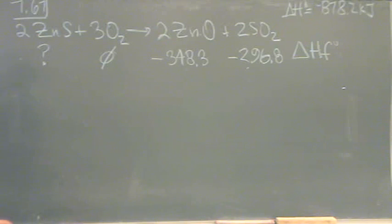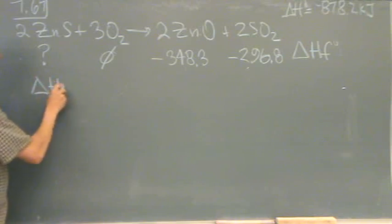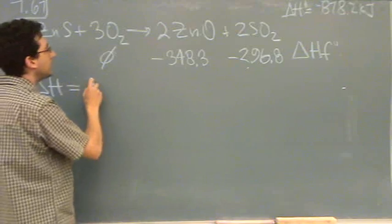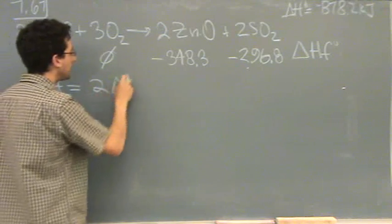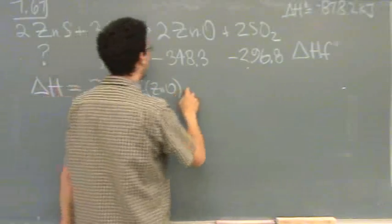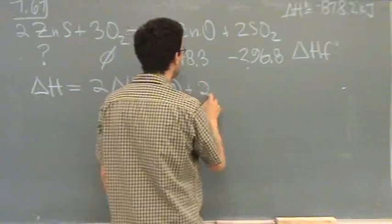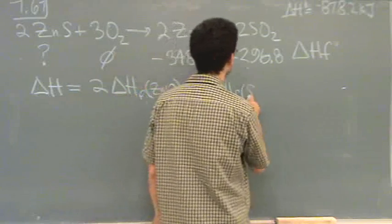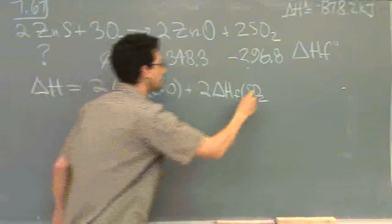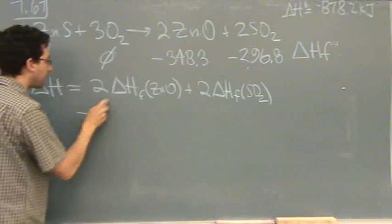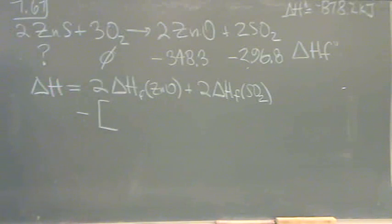So this is how I'm going to do it. Your book did it a slightly different way. The delta H overall for the whole reaction is equal to the products minus the reactants. So 2 times the delta H of formation of the zinc oxide plus 2 times the delta H of formation of the sulfur dioxide.